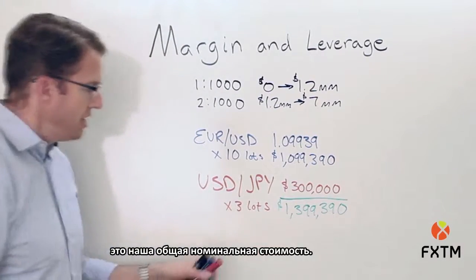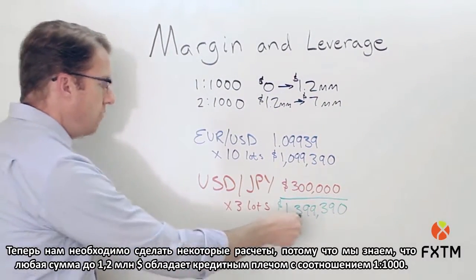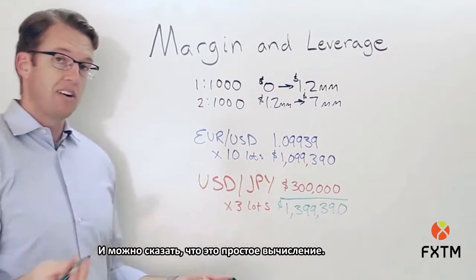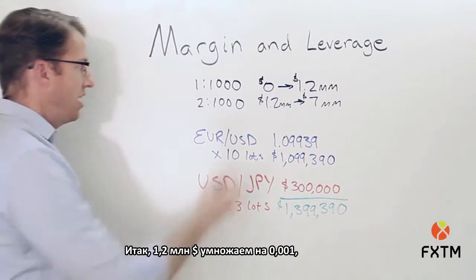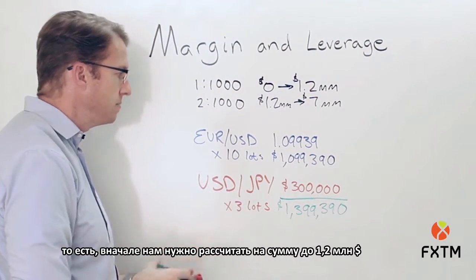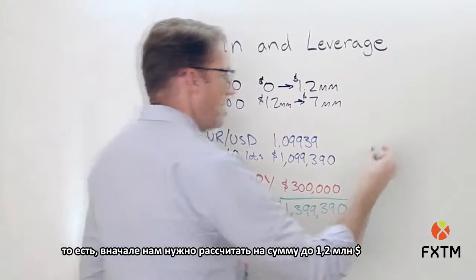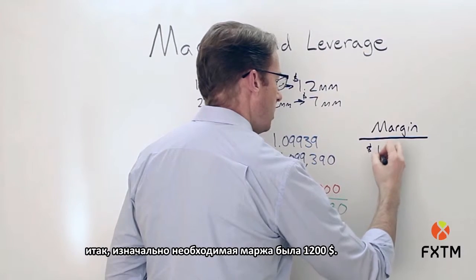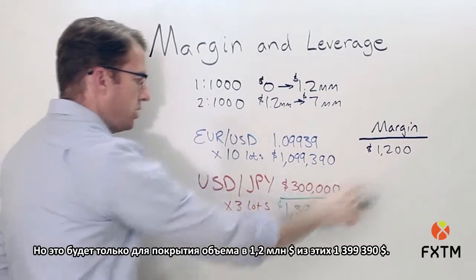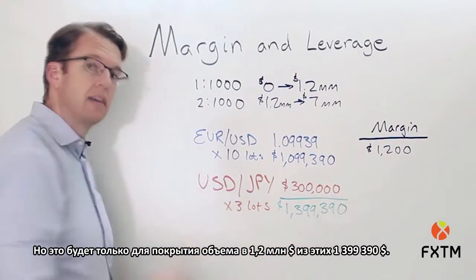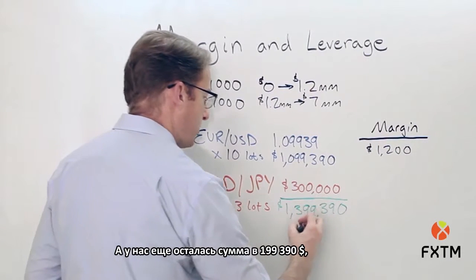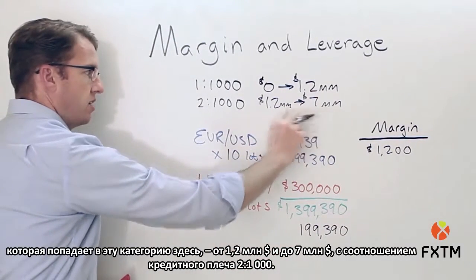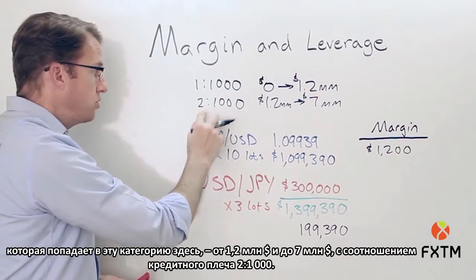Now we have to do a tiered calculation. Of the $1,399,390 total notional value, up to $1.2 million is at the 1:1000 leverage ratio. So we multiply $1,200,000 by 0.001, which gives us a margin requirement of $1,200 for that portion. But that only covers $1.2 million, leaving a remaining $199,390 that falls into the $1.2 million to $7 million bracket with a leverage ratio of 2 to 1,000.